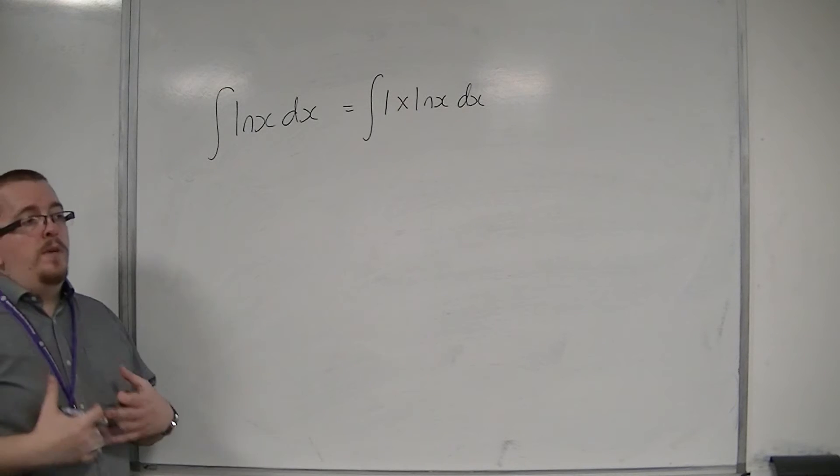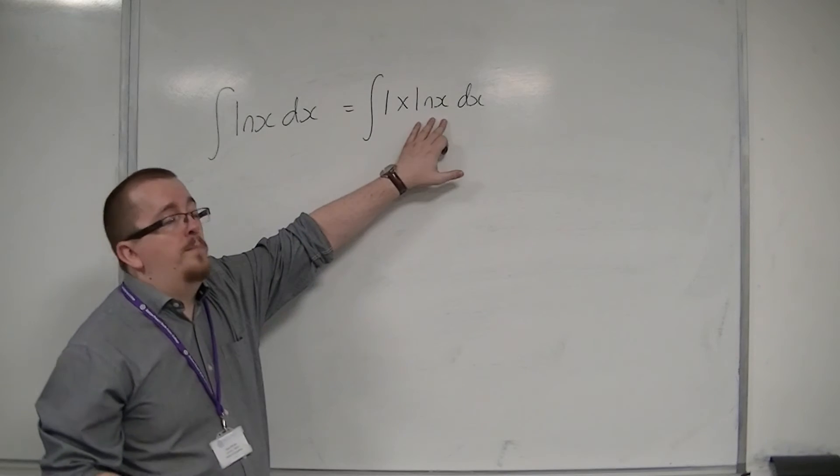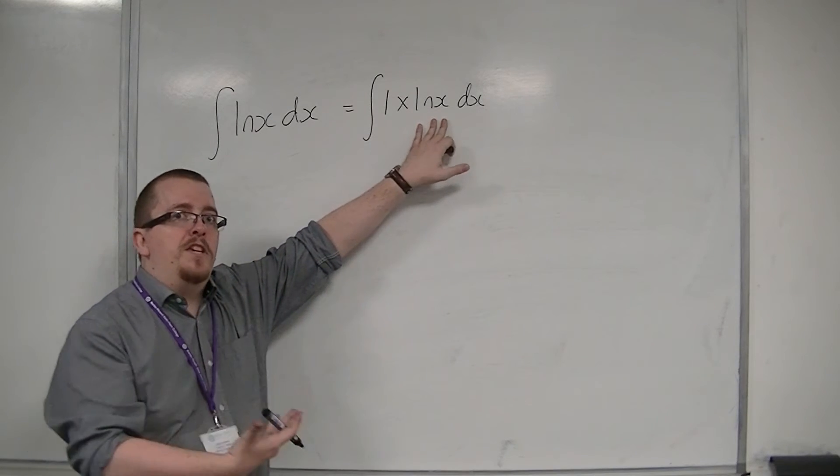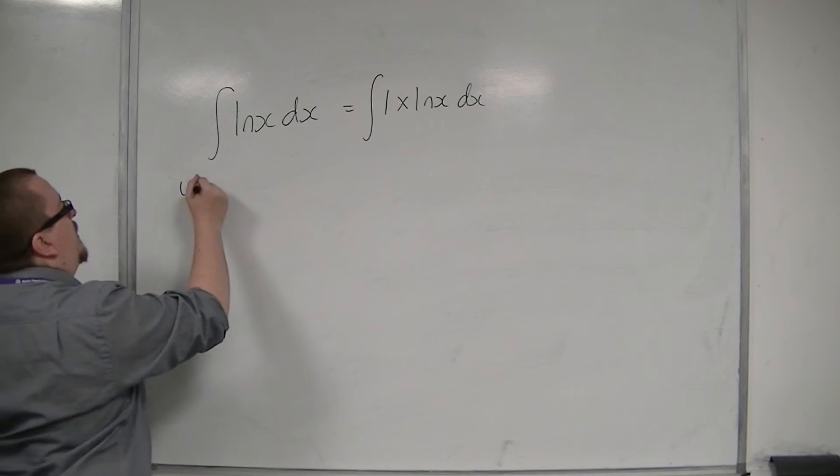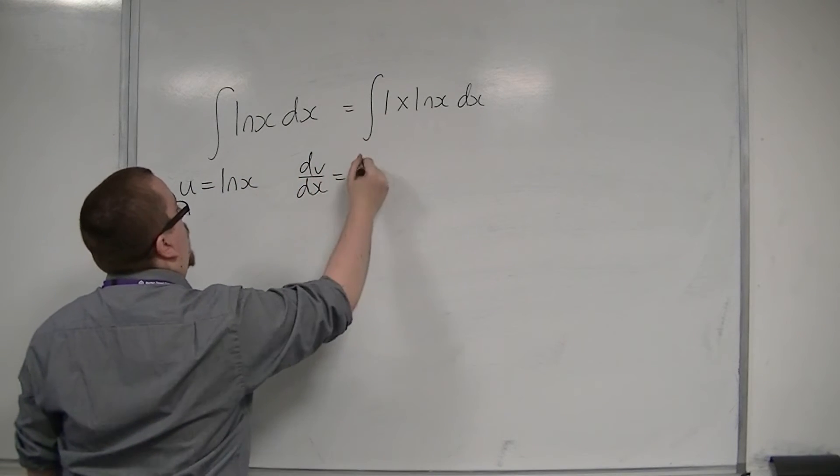Now, if we're using LIATE, then that means we're going to pick log x as the u. So u equals log x, and the dv/dx will be what's left over, and that's that 1.